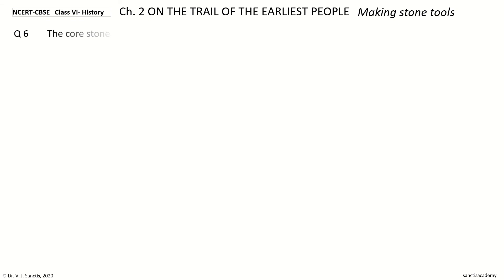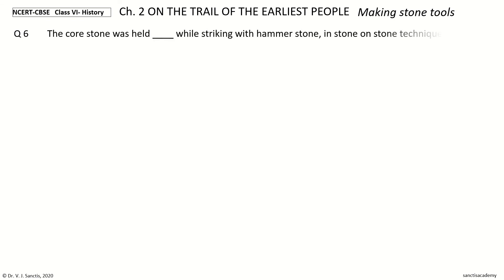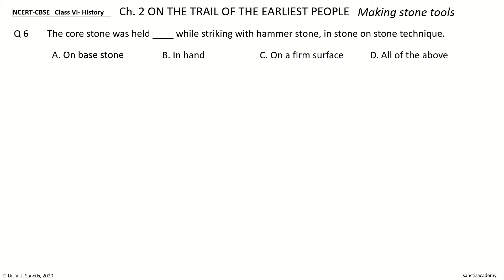Question 6: The core stone was held dash while striking with the hammer stone in the stone on stone technique. The options are: on base stone, in hand, on a firm surface, all of the above. And the answer is in hand.